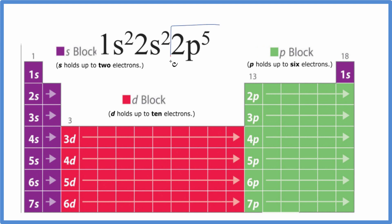Our configuration ends in 2p⁵, so we need to find the element here that ends in 2p⁵. So here's the 2, we go over p¹, 2, 3, 4, and here it is, 2p⁵.